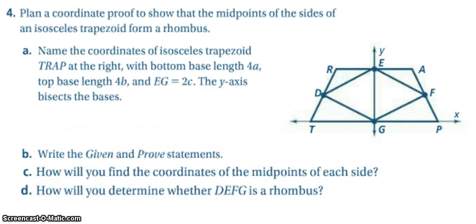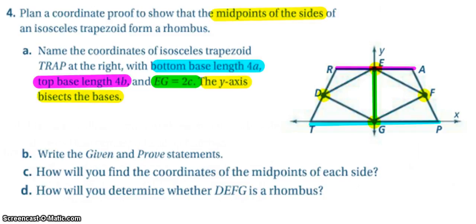Go ahead and try number four on your own and then come back if you need help or to check your answer. All right, this color coding should help you a little bit with trying to name the coordinates of TRAP, the isosceles trapezoid here. So go ahead and come back when you think you have all your coordinates.